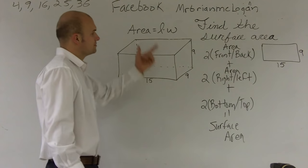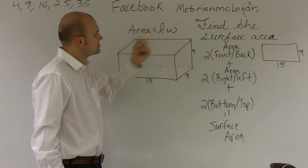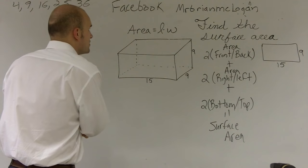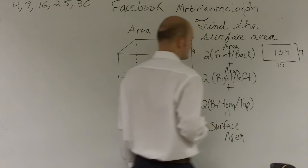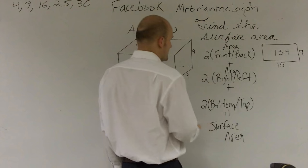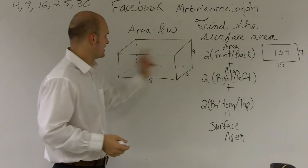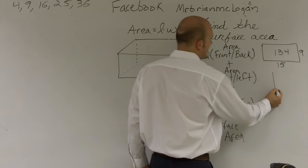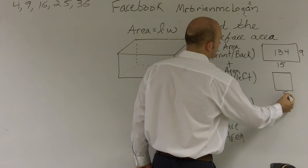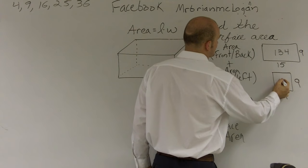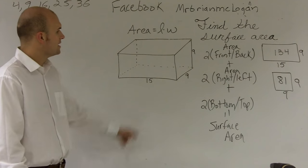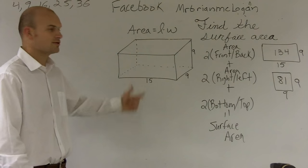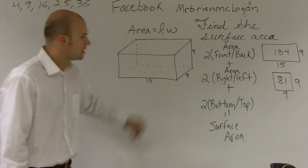for a rectangle it's going to be your length times your width. So 15 times 9 gives you 134. Then the area of the right and the left: the right side and left side are a 9 by 9 rectangle, which we call a square. 9 times 9 is 81. And the bottom and top are also going to give us 134.